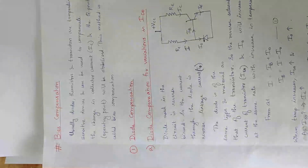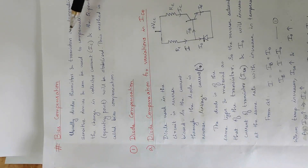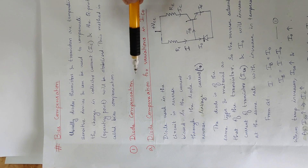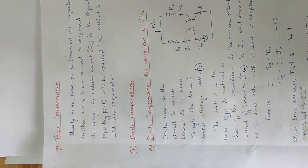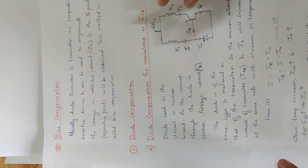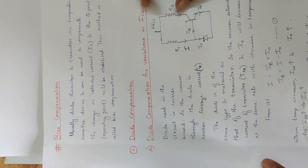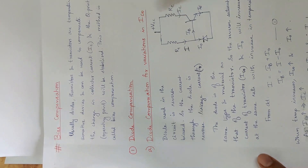We started with bias compensation. The first type of bias compensation is diode compensation, where the diode compensates the collector current. Before starting diode compensation, we need to know the basics about diodes.